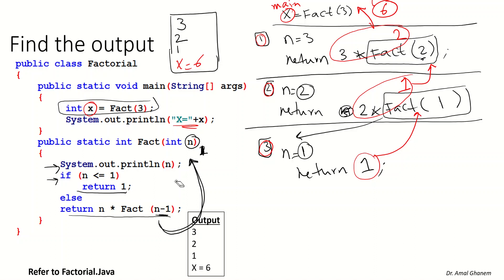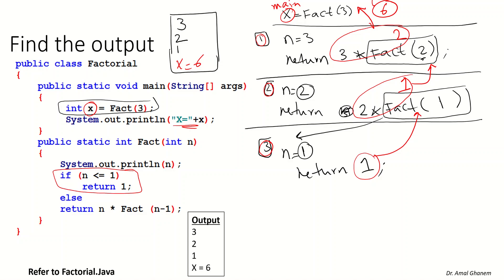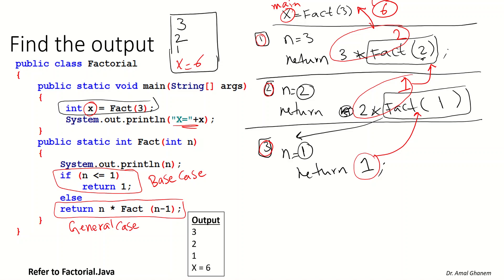The idea of a recursive method is that you call the method several times until you reach the end, then go one step back. We have two cases. The first is if n equals 1: return 1 — this is the end of the recursive method. We call this the base case, the case where we end our recursive method. The other case — calling the method again — is called the general case, where you continue calling your method with fact(n minus 1).